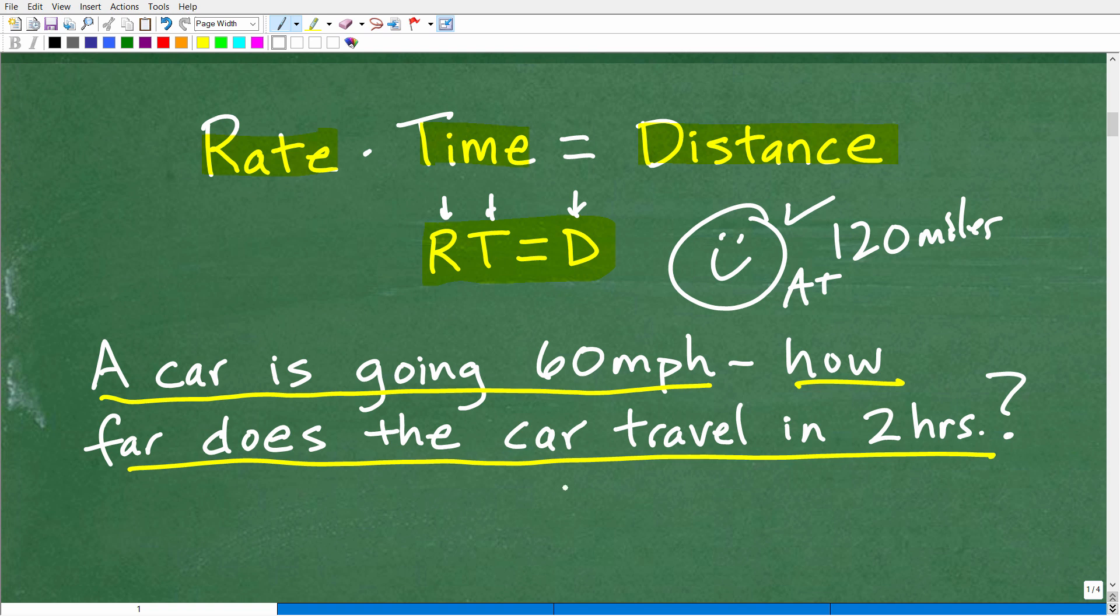Now, this happens to be a rate, time, and distance problem. So looking at this, you're saying okay, how can I figure this out? Well, we could use this relationship. A formula in mathematics or science, physics, and whatnot is a relationship between different variables. In this particular formula, it's a relationship between rate, time, and distance. So let's use the formula to actually solve this problem. We know the answer is going to be 120 miles.